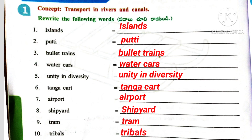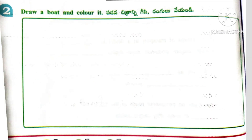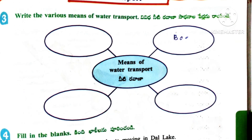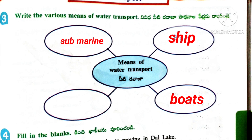Last one: Tripals. Next activity: Draw a boat and color it — here we have to draw a boat and color it. 3rd one: Write the various means of water transport. Answer: Boats, Submarine, Jet Scooter.